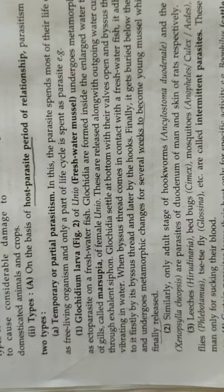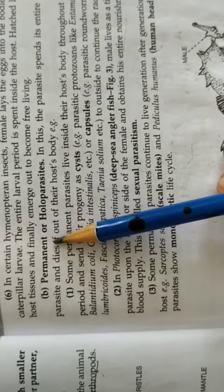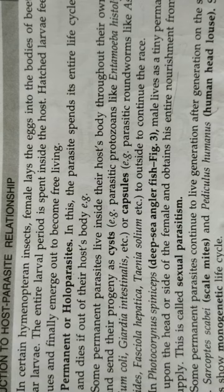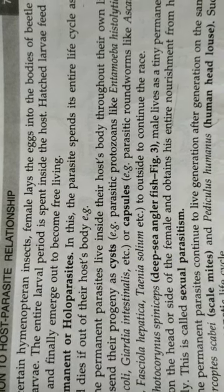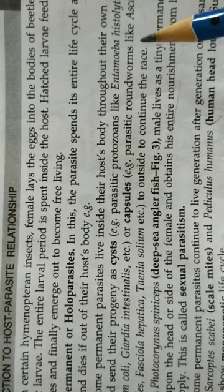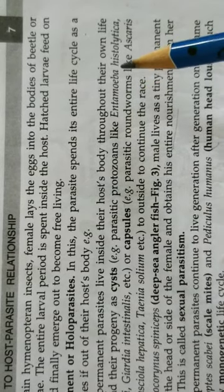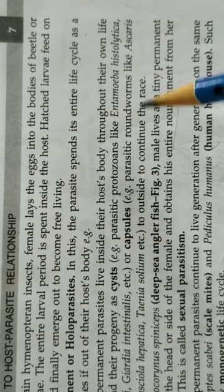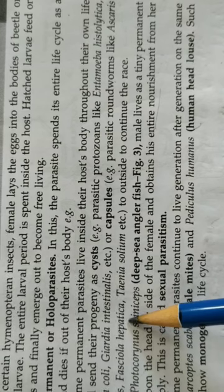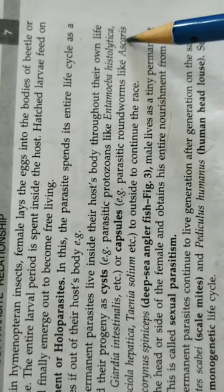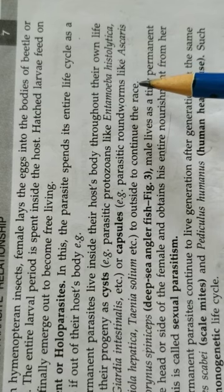The next type of parasitism is permanent or holoparasitism. Permanent means the parasite remains with its host for its entire life. Holoparasites are parasites which remain with their host for the entire life. Examples include Entamoeba histolytica, which causes amoebic dysentery, and is a permanent parasite. Other examples are Taenia solium, Fasciola hepatica, and Ascaris — parasites which remain with their host for their lifetime.